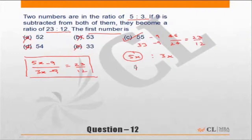So please go to the understanding of the question. Don't jump to calculation straight away. The question says the numbers are in the ratio of 5 is to 3. That means the first number should be a multiple of 5 and the second number should be a multiple of 3.